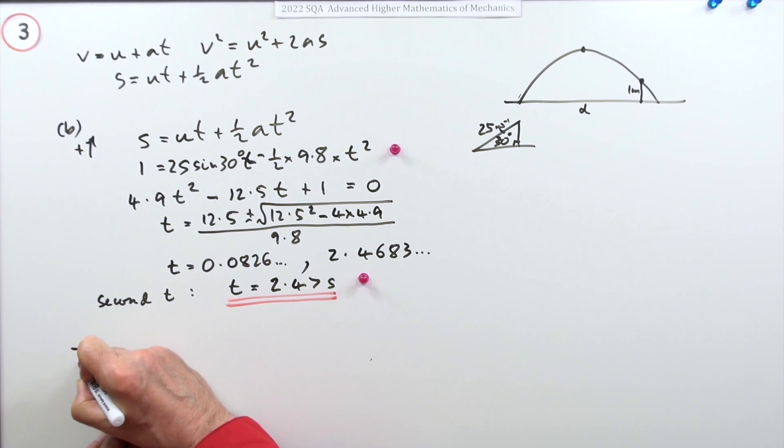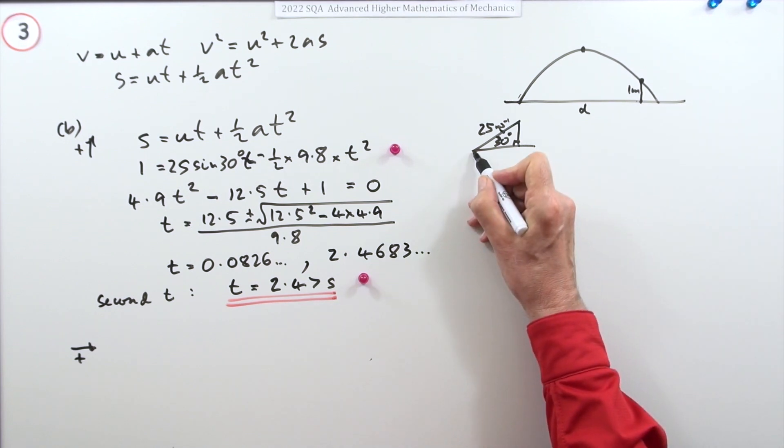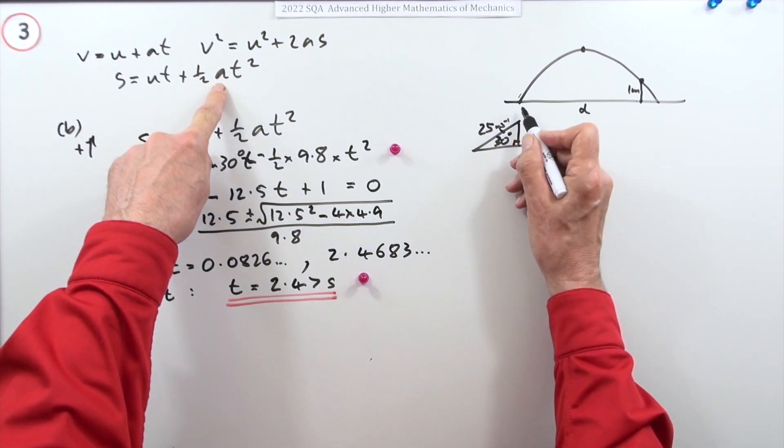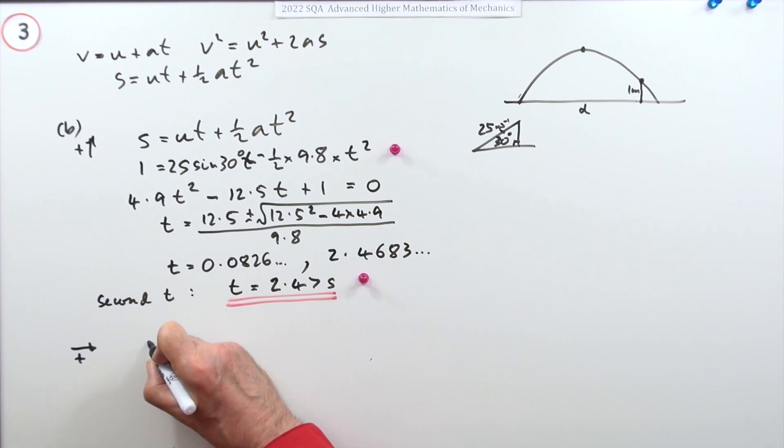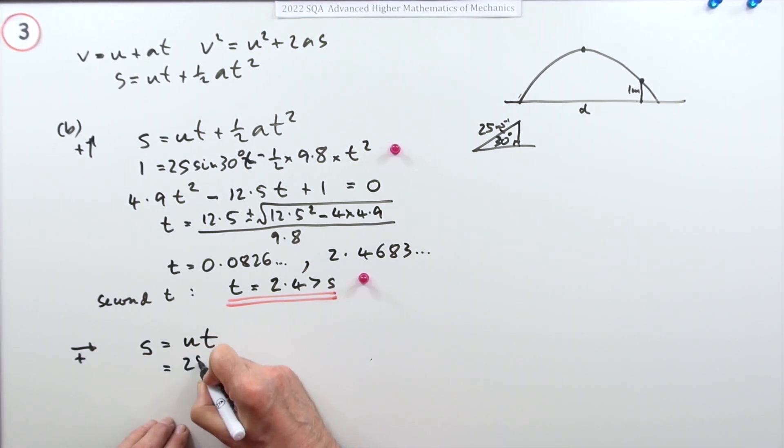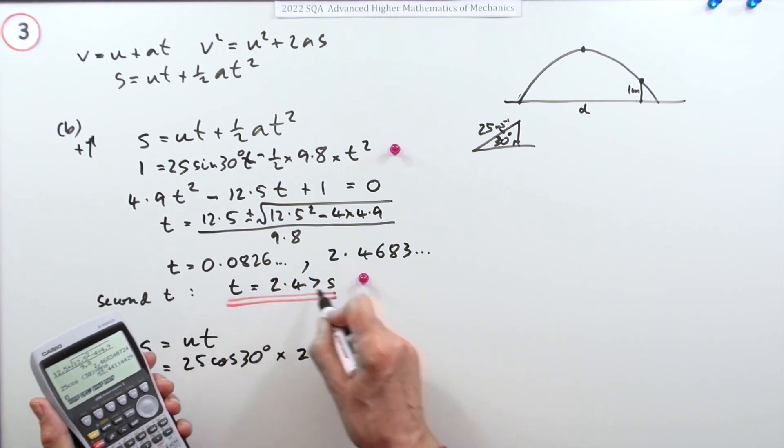Now you can consider the horizontal motion going this way. You know how long it took to get there. Taking the horizontal component, you could use this equation. There's no acceleration, it's a constant velocity across the way. For this part I can just say s equals ut. So this distance will just be the speed component which is the cosine, so it'll be 25 cos 30, which is root 3 upon 2, times the 2.4683. I'm going to use that stored value just to keep it accurate.